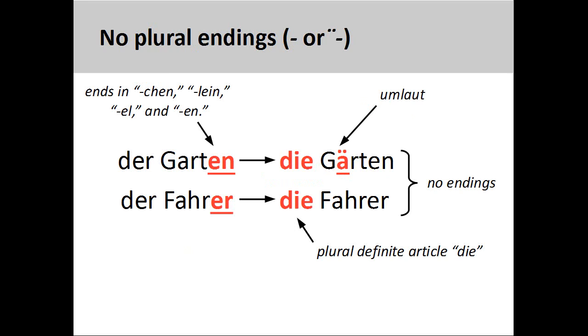The first group consists of nouns that do not take a plural ending, although some of them may add an umlaut to the stem vowel of the noun. Most nouns in this group are masculine and neuter nouns ending in -chen, -lein, -el, and -en.